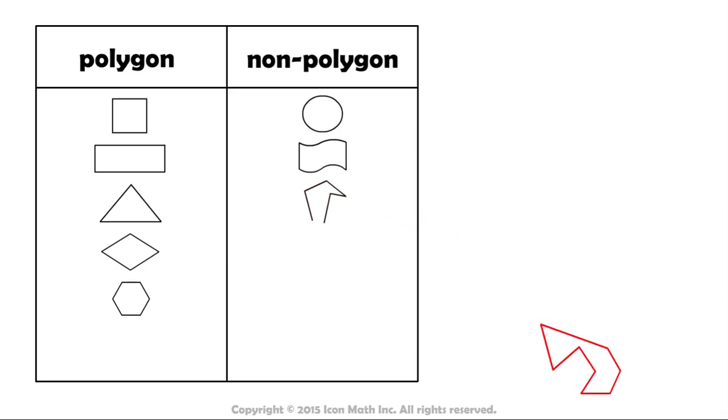This shape might be new to us, but still notice that it is made up of line segments, and it is a closed shape. Therefore, it is a polygon.